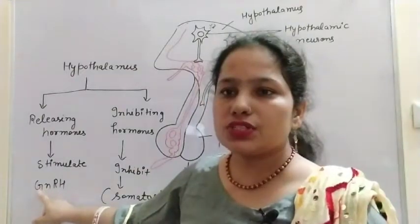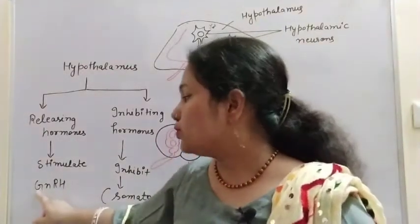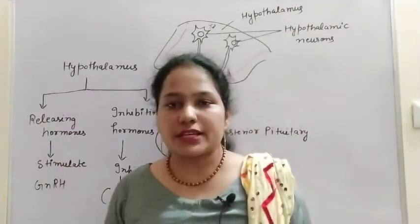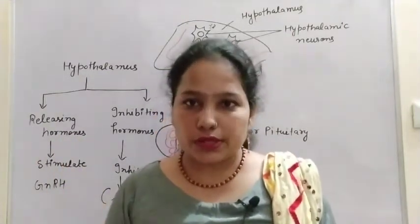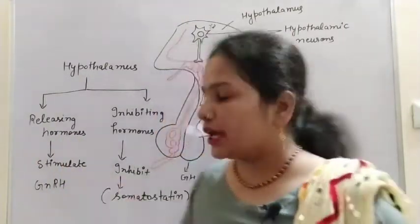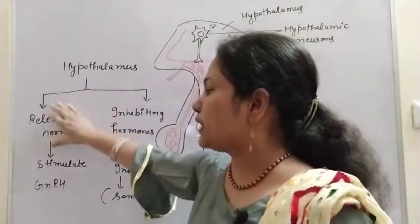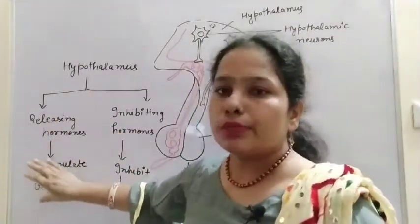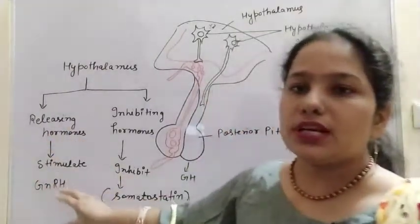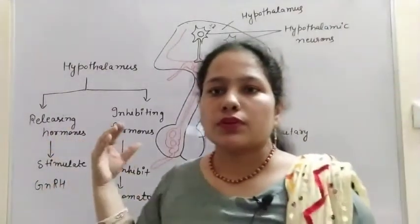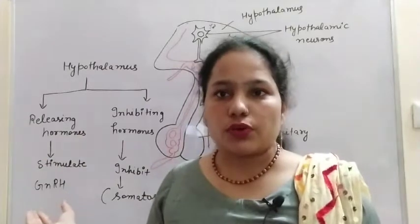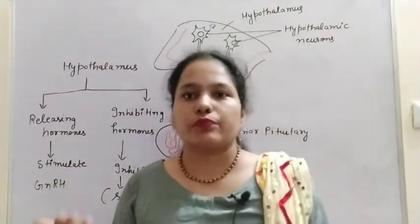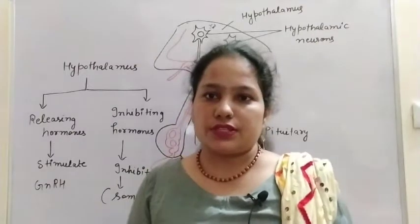Let's take an example of a releasing hormone. The first is GnRH — gonadotrophin releasing hormone. Gonads are related to our reproductive organs. GnRH stimulates the pituitary to release gonadotrophin hormones. The gonads are the ovaries and the testes.